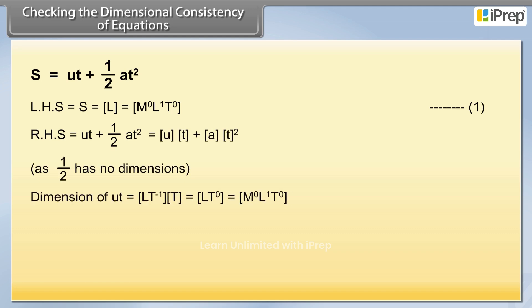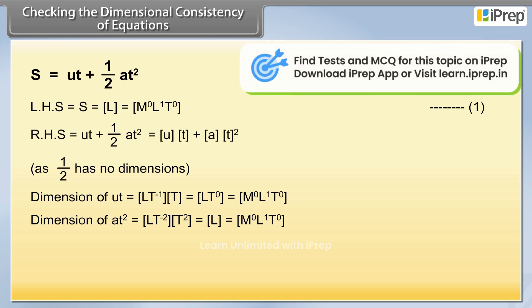Dimension of ut is [M⁰L¹T⁰]. Dimension of at² is [M⁰L¹T⁰].